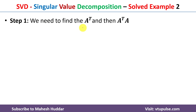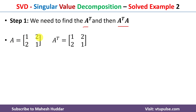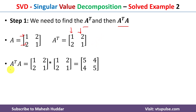In the first step, we need to find A-transpose and then compute A-transpose multiplied by A. A is equal to [1 2; 2 1]. A-transpose is obtained by converting the rows of the original matrix into columns — the first row becomes the first column and the second row becomes the second column. Once we have A-transpose, we calculate A-transpose multiplied by A.